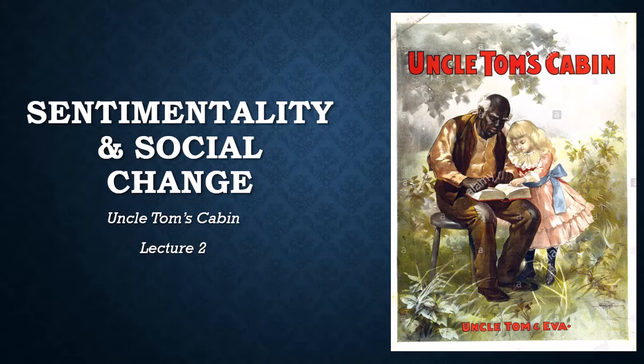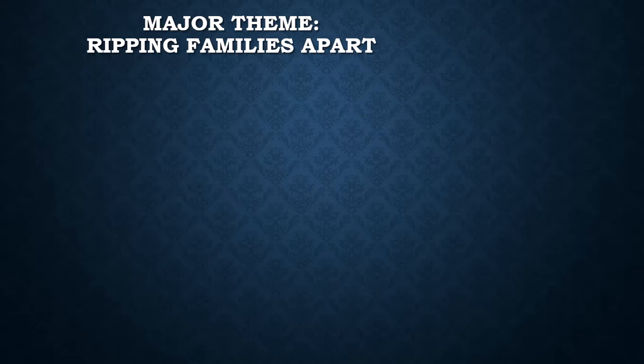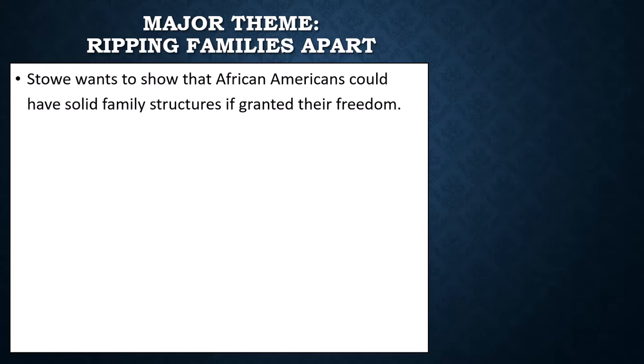What are some of the major themes of the book? Well, the author focuses on ripping families apart. Family and the domestic sphere — the domestic sphere meaning the home — both of these things are going to be extremely important to the author. Stowe wants to show that African Americans could have solid family structures if granted their freedom. This is particularly true of families where we have Christians, and that ties into one of the other themes: religion and Christianity.